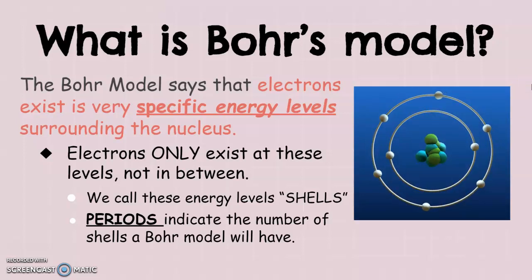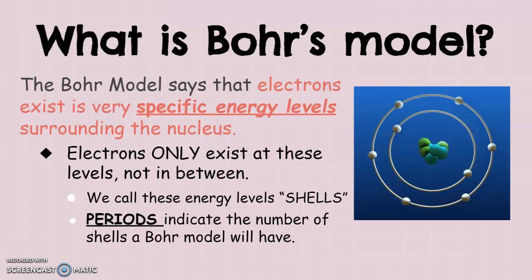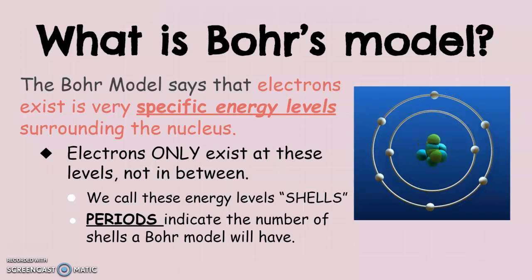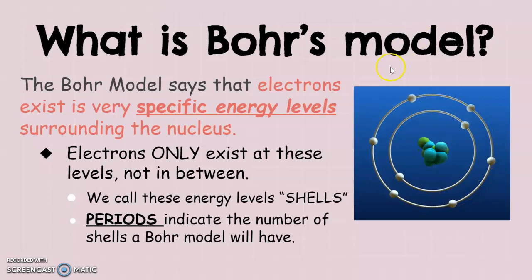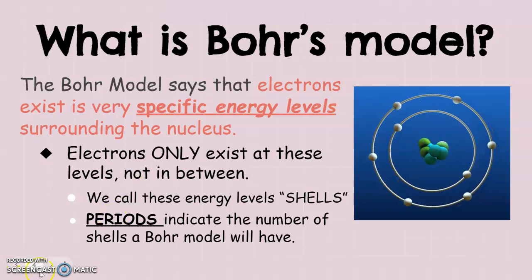If you need to know how many shells an element is going to have, you need to look at the period on the periodic table. So when you look at the periodic table, let's say that the element is in period three — it's in row three. Remember, our periods are the horizontal rows that go from left to right. So if you have an element in period three, that means it's going to have three rings. The energy level corresponds to the period that the element is located in.